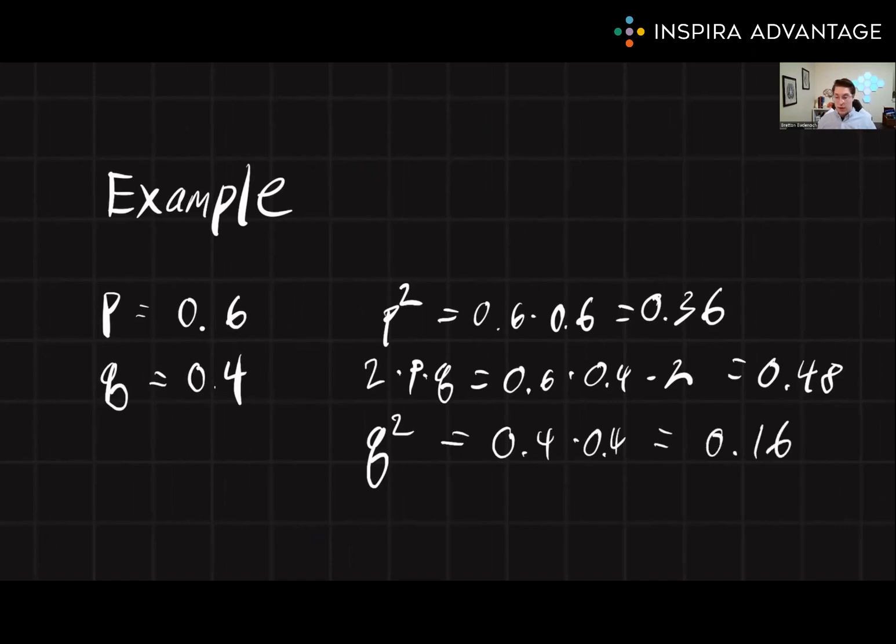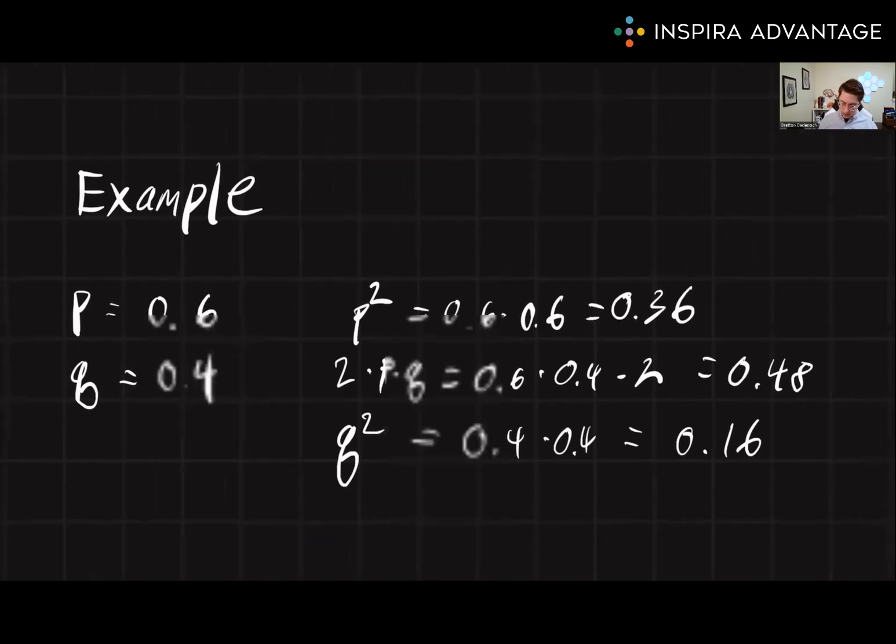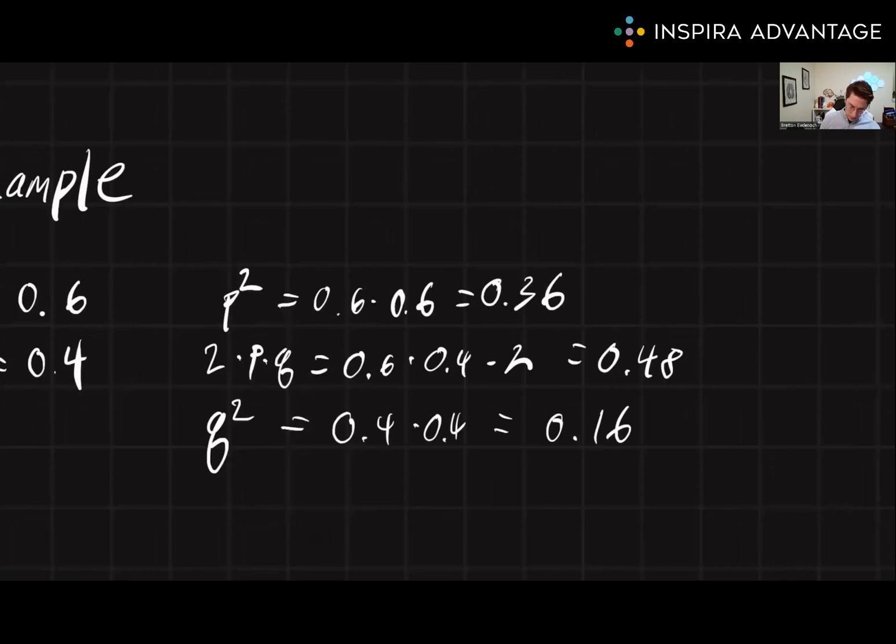And you always want to make sure that your numbers add up to 1 in the end, because we know p² + 2pq + q² = 1. So this is a good way to check to see if you did it right. So 0.36 plus 0.48 equals 0.84 plus 0.16 equals 1.00.